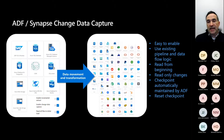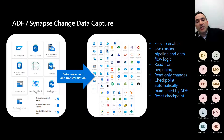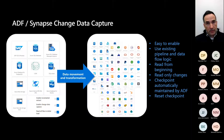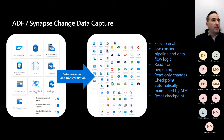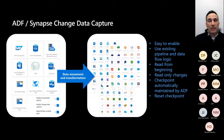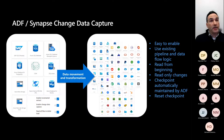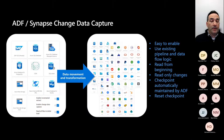Some key capabilities: CDC is easy to enable - you can use your existing pipeline and data flow logic without changes, just enable the checkboxes. You have the option to read from the beginning or only read changes. It's a good idea to check 'read from beginning' on your first run to get all the data, then subsequent runs only process changes. The checkpoint is automatically maintained by ADF - you don't need to worry about it, but you can always reset it and start over in the change data trail.